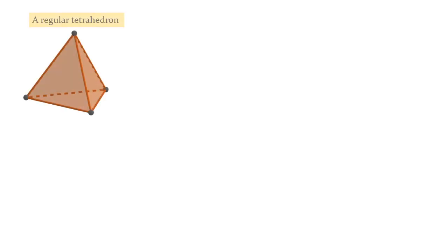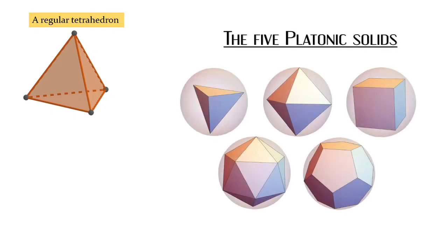The regular tetrahedron is the simplest Platonic solid and it's widely used in chemistry and in mathematics. So let's see how to construct this. We know these are the five Platonic solids and these solids have very interesting properties.